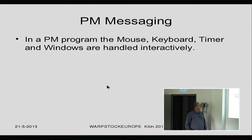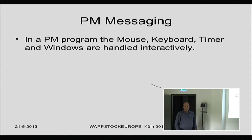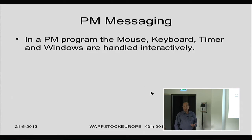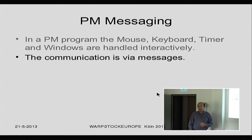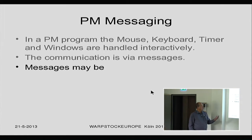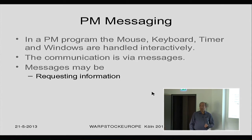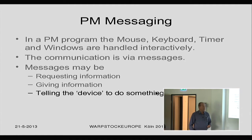In a PM program, we have a number of items which are handled interactively: the mouse, the keyboard, the timer, and the windows. They all react with each other and with the user. The reaction is done via messages. Messages may be asking for information, giving information, or telling the device to do something — for example, telling the window to resize, move, or disappear.